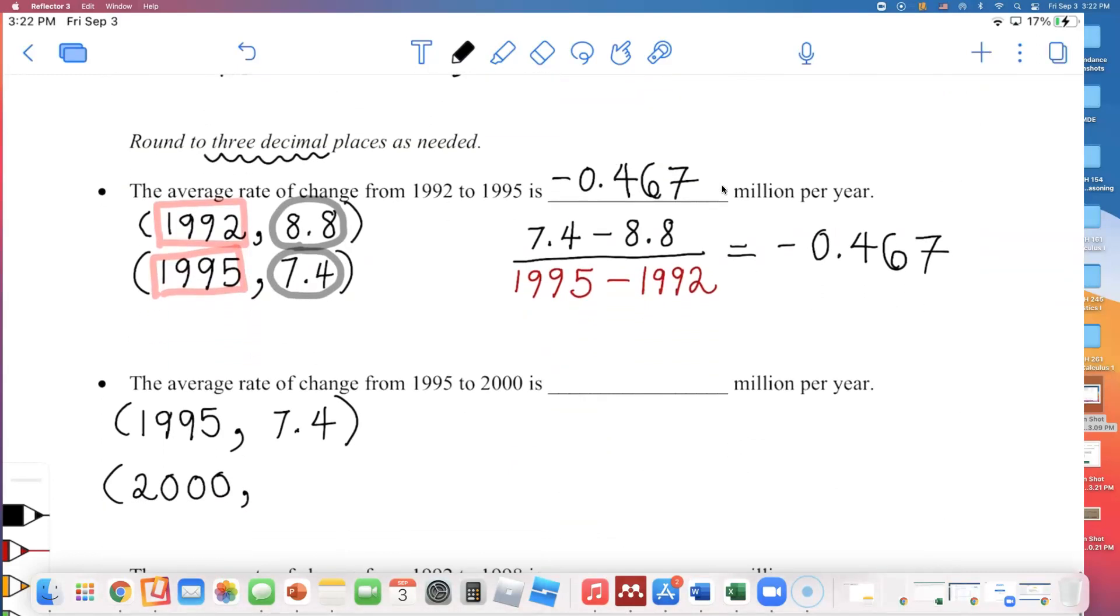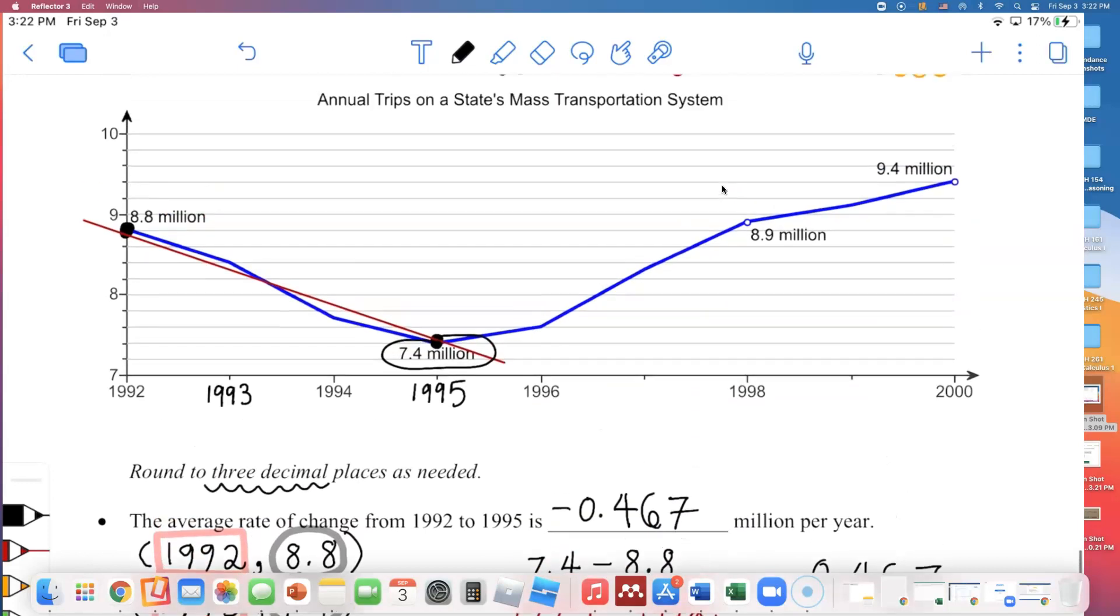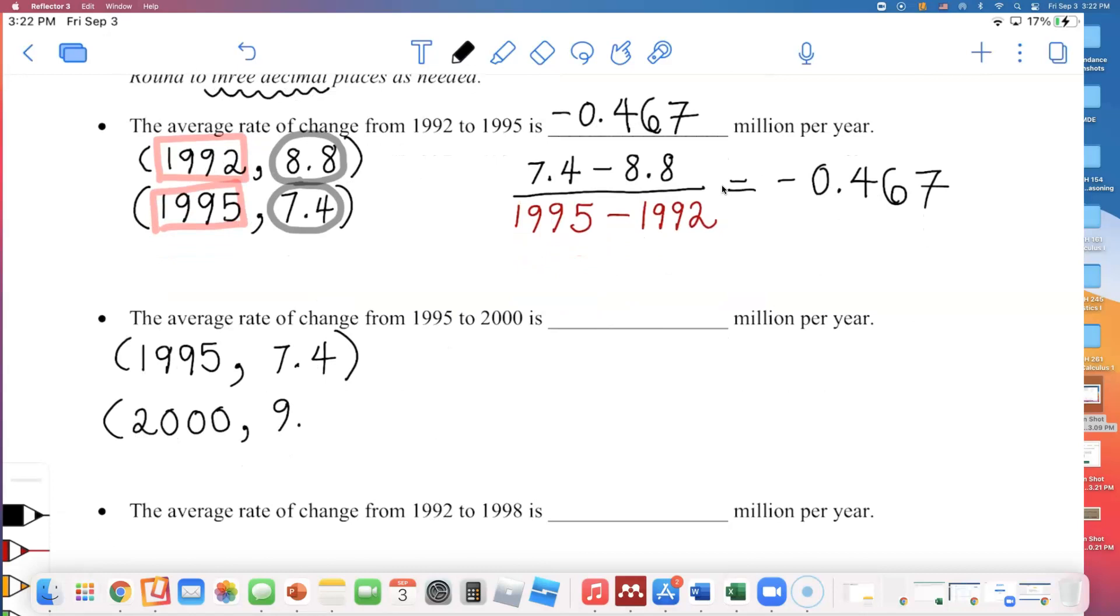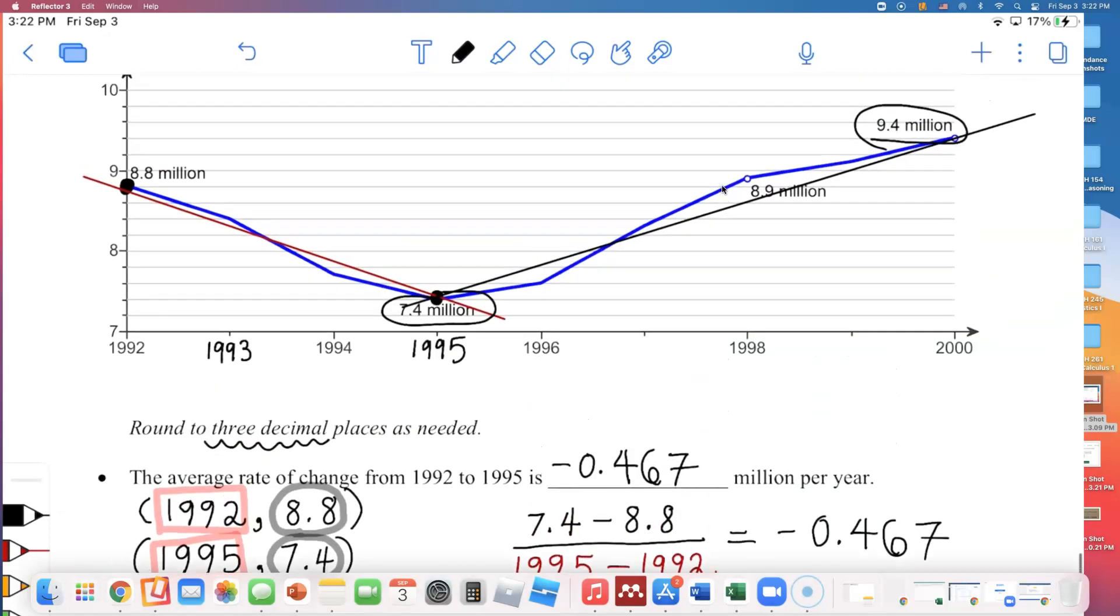How about in 2000? In 2000 there were 9.4 million. And as you can see, this time the line's going up from left to right, so we're expecting to get a positive slope. The y value was 9.4.